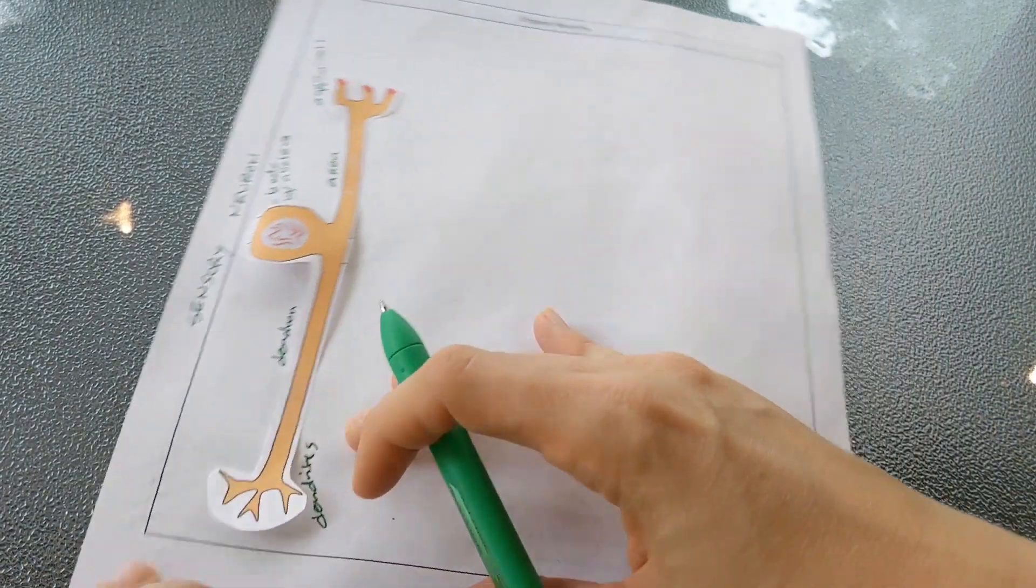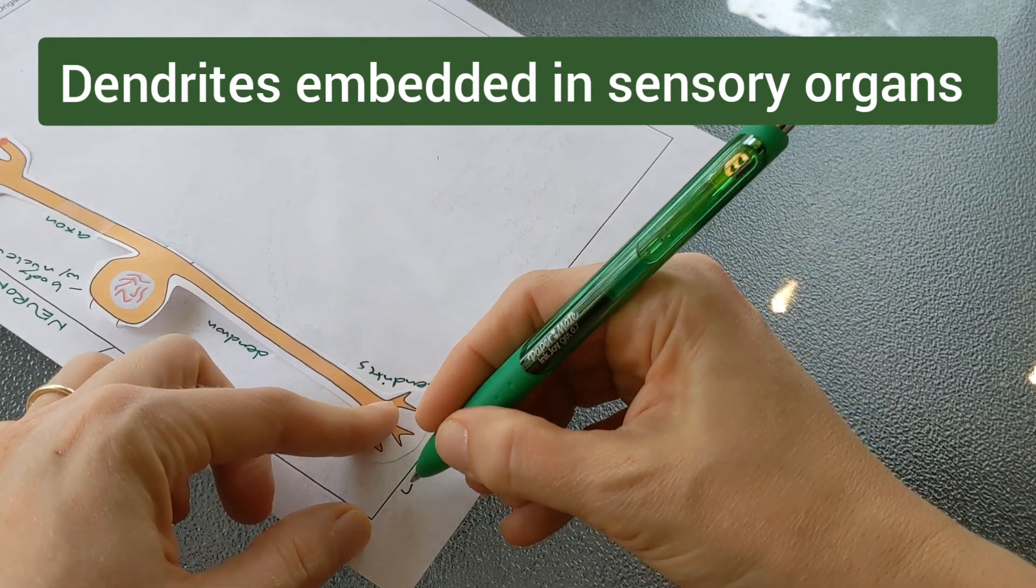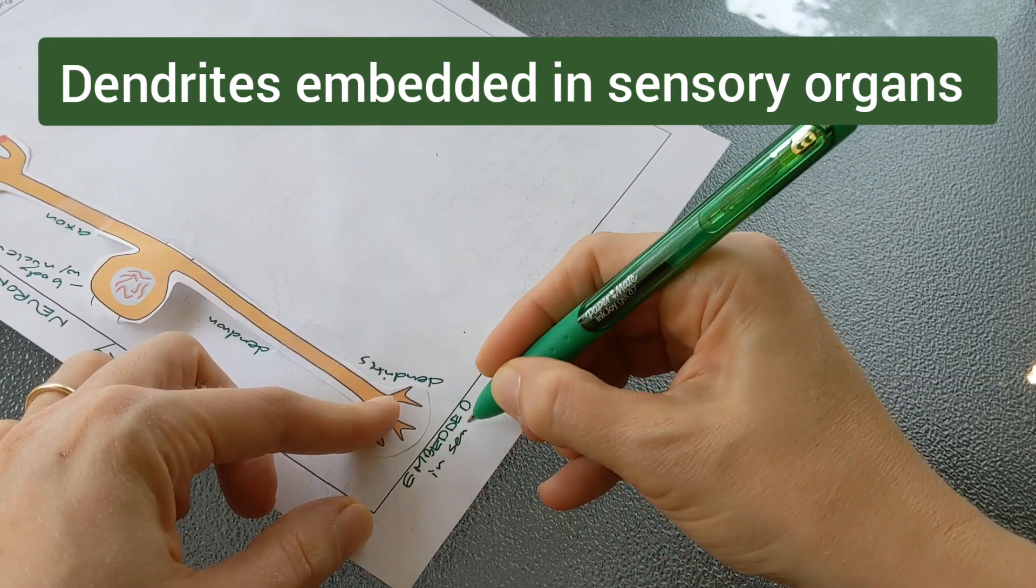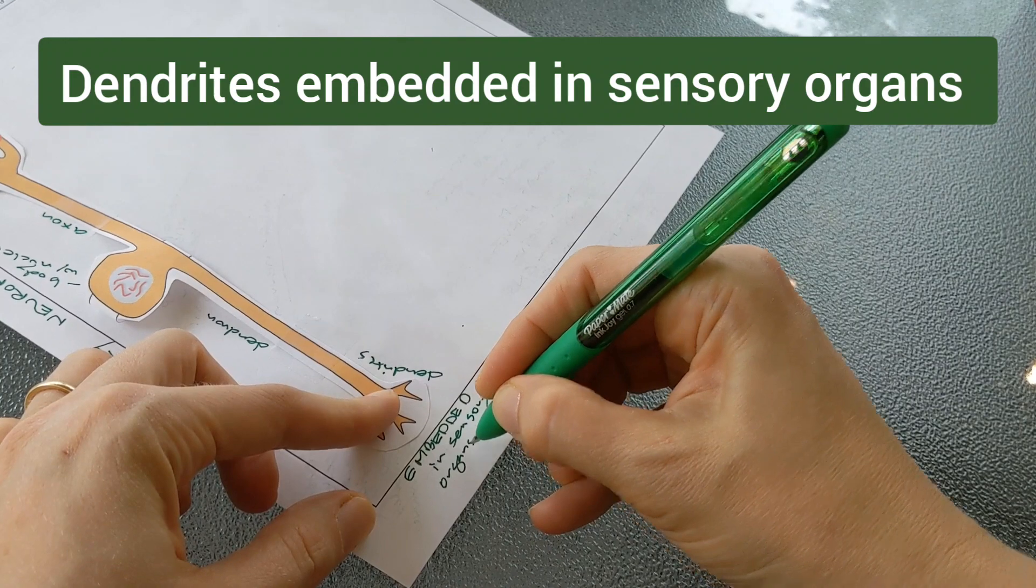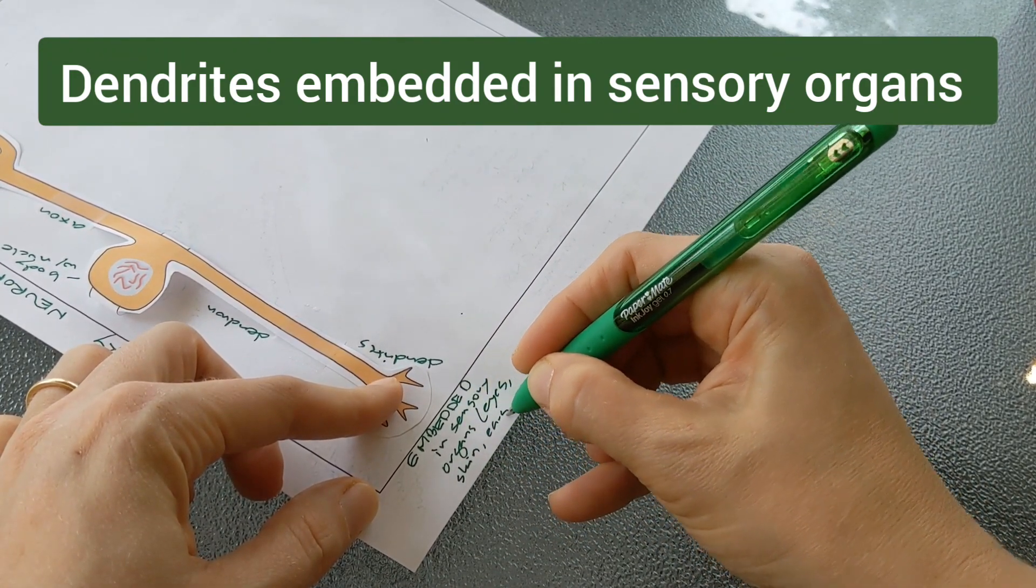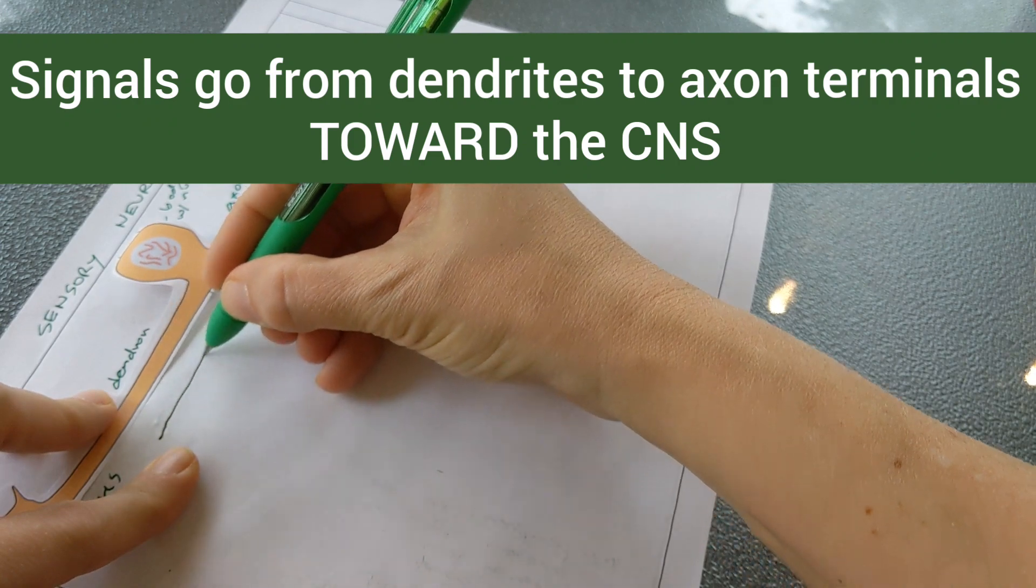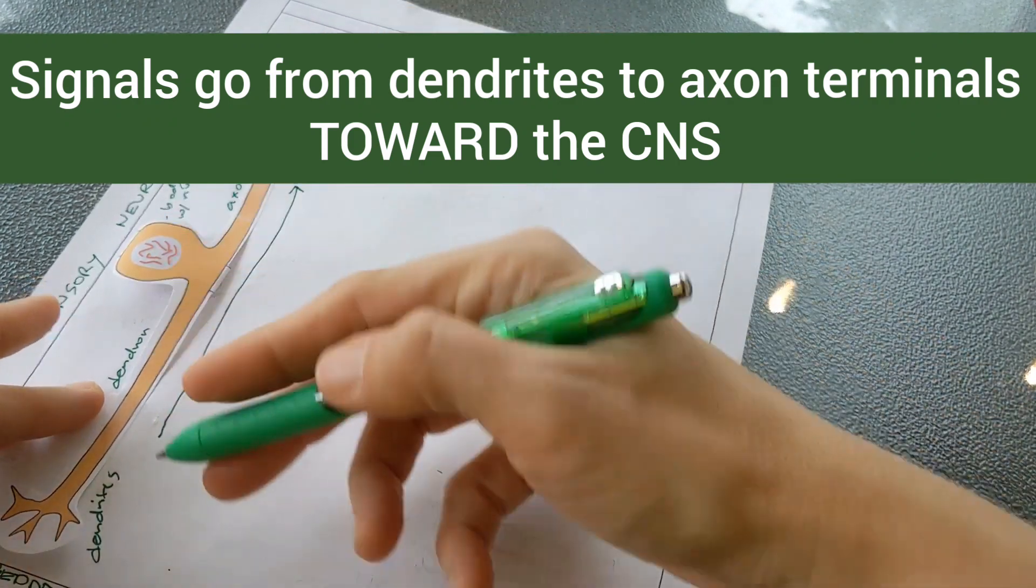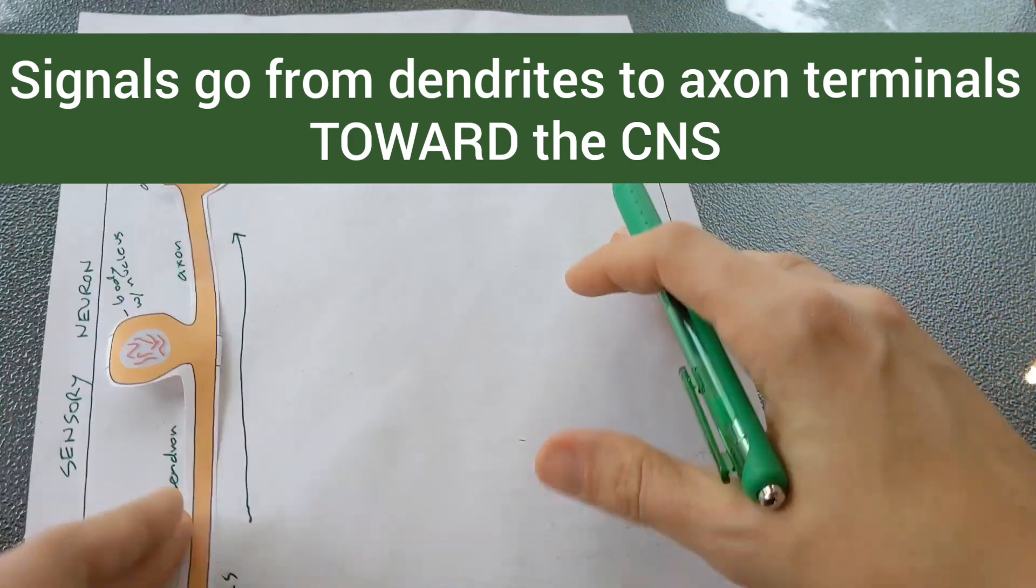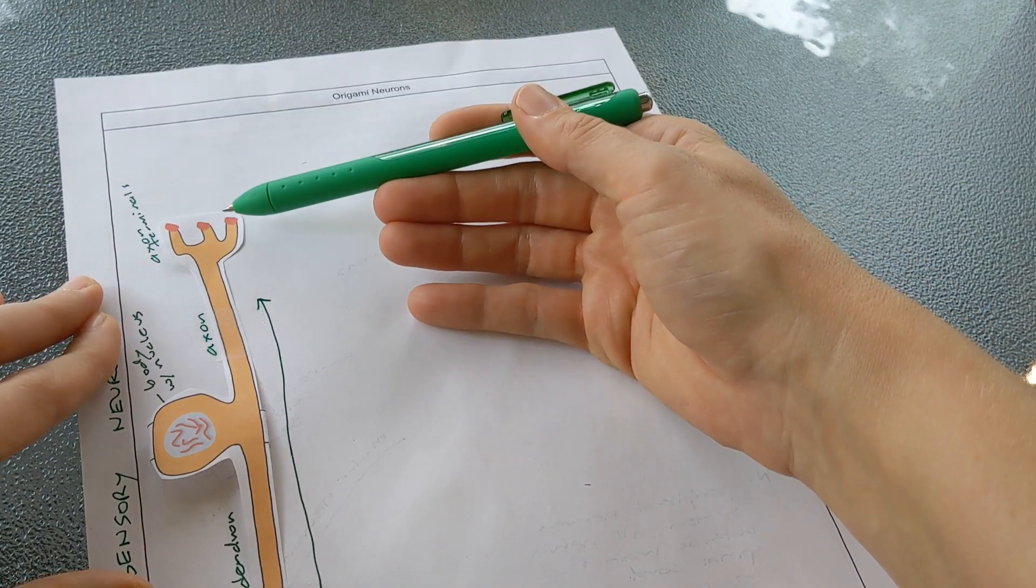And remember that the sensory neuron is always going to pick up signals from the sensory organs, so the dendrites are embedded in sensory organs such as the eyes, the skin, the ears, and they're going to be picking up the signals, which means that this neuron sends its signals this direction. Neurons go from dendrite to axon terminals, so the signals get picked up in the sensory organ, transferred to the axon terminals, and then those signals are going to go to the brain. They're going to travel up the spinal cord into the brain.